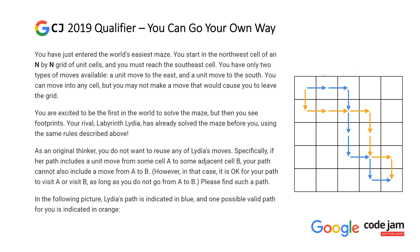The problem states you have just entered the world's easiest maze. You start in the northwest cell of an N-by-N grid of unit cells, and you must reach the southeast cell. You have only two types of moves available: a unit move to the east and a unit move to the south. You can move into any cell, but you may not make a move that would cause you to leave the grid.